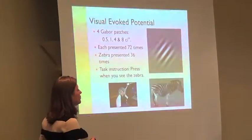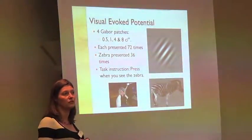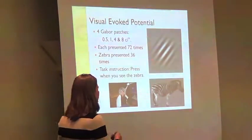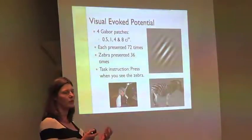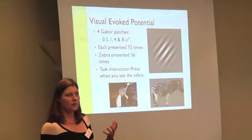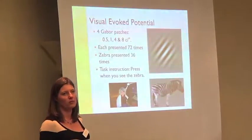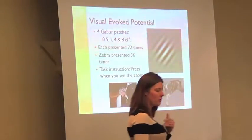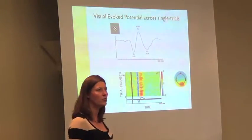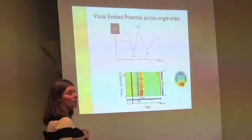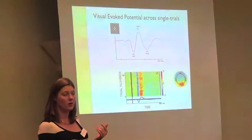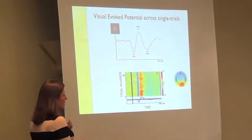I carried out a study where I was interested in the visual evoked potential in individuals with and without autism. In this task, people looked at Gabor patches and sporadically a picture of a zebra appeared, and the participant's task was to press a button when the zebra appeared. I measured the visual evoked potential, and I realised that with something like a visual evoked potential it's very robust and you can see activity on single trials.